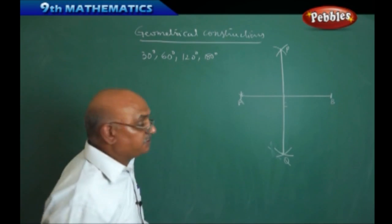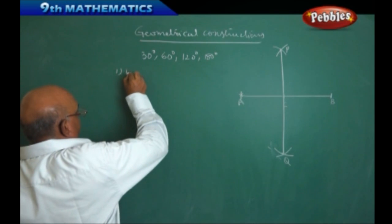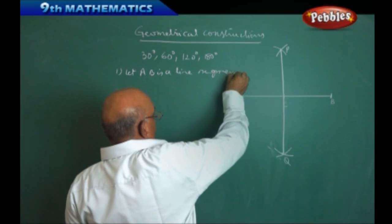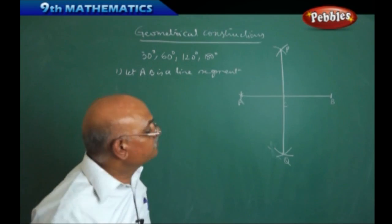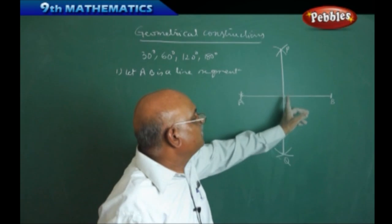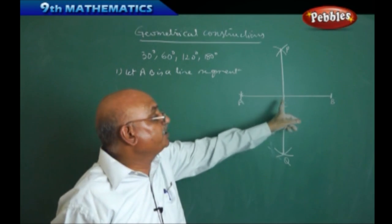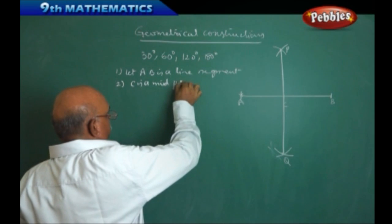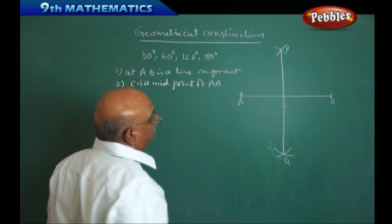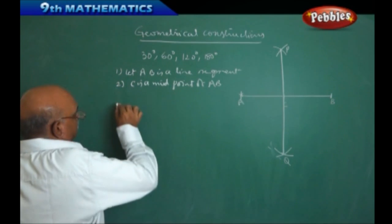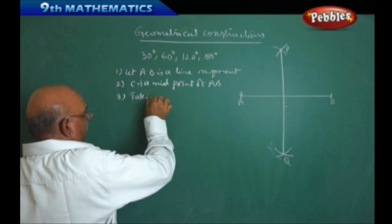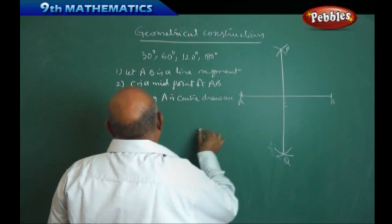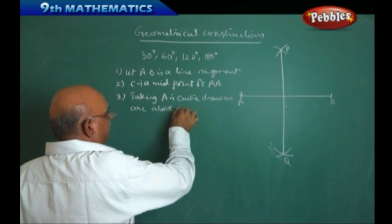Formally, the first step is: let AB be a line segment. Second step: C is the midpoint of AB. Third step: taking A as center, draw an arc above and below the line.